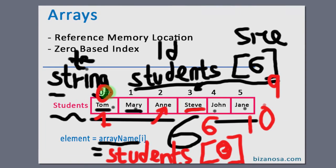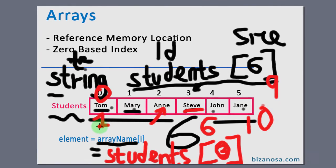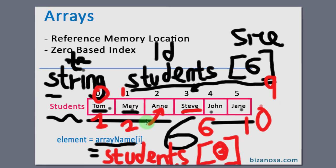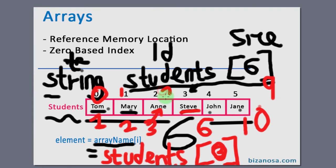And the first array, you start counting from zero. The second array will be one. Then the third array will be accessed at index two.